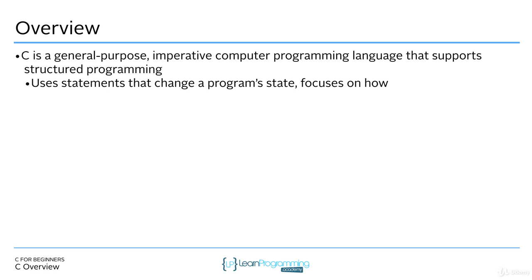C is a general purpose imperative programming language. It supports structured programming. We talked about higher level languages and described how C is a higher level programming language. This just means that it's easier and more efficient to use than writing assembly language, understanding instruction sets. It's very general purpose, which means you can write all sorts of applications in the C programming language.